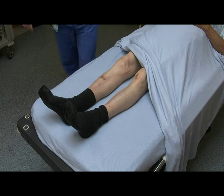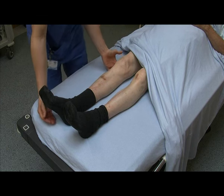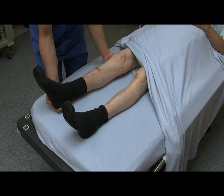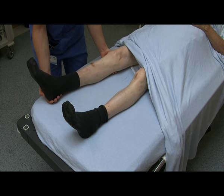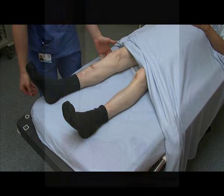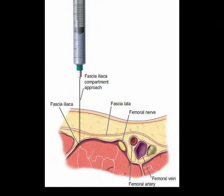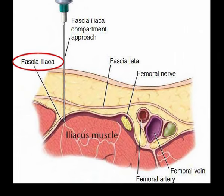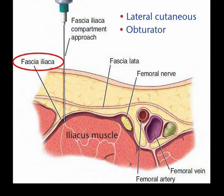Next, place the patient in the supine position with the leg slightly abducted and externally rotated if possible, in order to identify the landmarks more clearly. The aim of the fascia iliaca compartment block is to achieve a field block by injection of local anaesthetic deep to the fascia iliaca, to target the lateral cutaneous, obturator and femoral nerves.